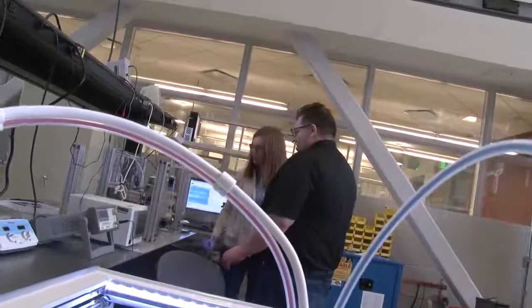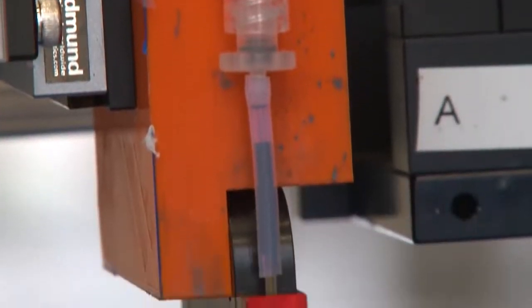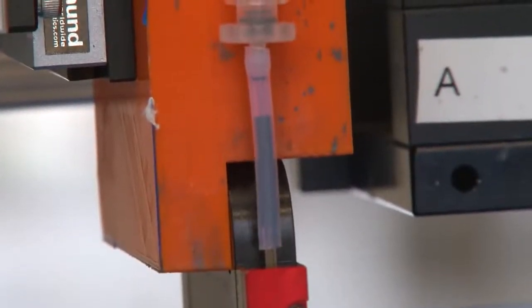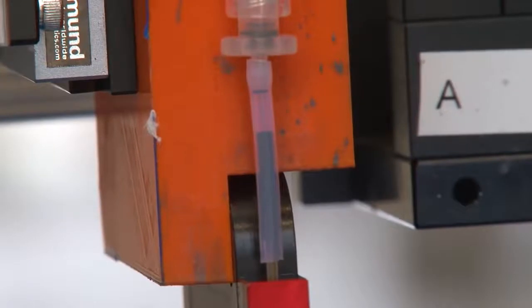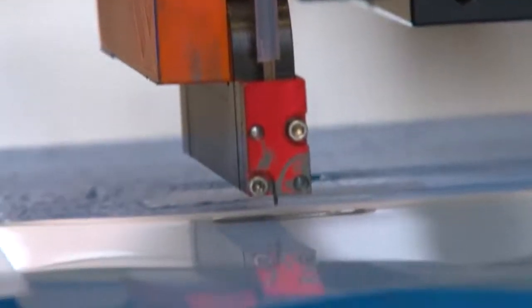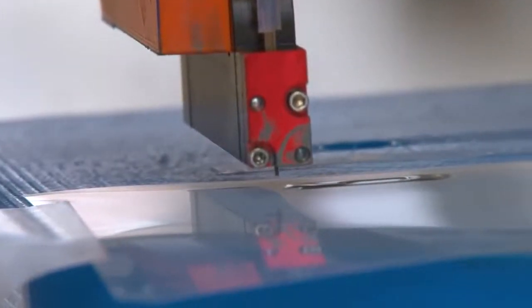The inkjet printer we use is actually really similar to the one in your home or office, just on a much smaller scale. It has a glass tube surrounded by a piece of material that flexes when you put a voltage through it. Based on the voltage, it flexes a different amount, squeezing the glass tube to produce droplets.